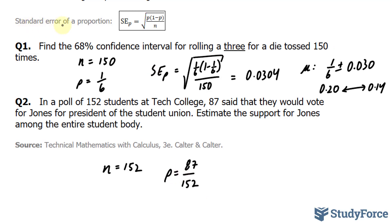So we have everything we need to find the standard error of our proportion. Standard error of our proportion is equal to 87 over 152, times 1 minus that same fraction, divided by 152.